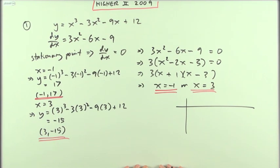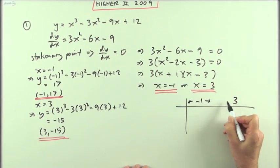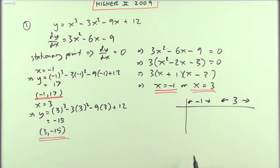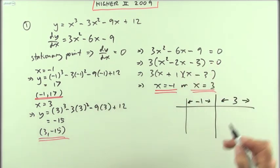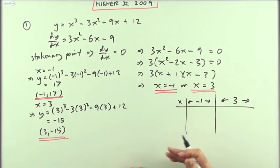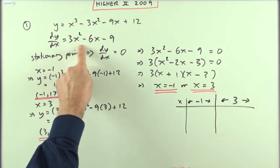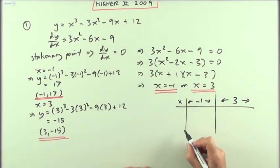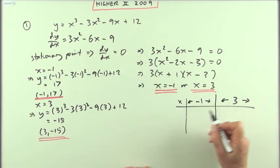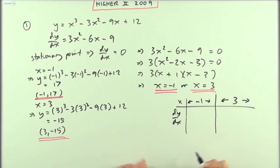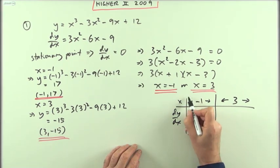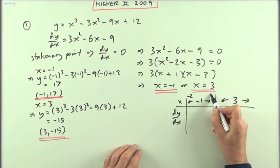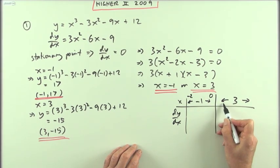Now it all depends — you put down your table of signs. You may well have to do it this way: put down something before and after each of those points, considering them as neighborhoods, keeping those two points quite separate. Then actually work out where dy/dx comes to at certain chosen values. So before −1 you might pick −2 or −10; after it you could use zero.